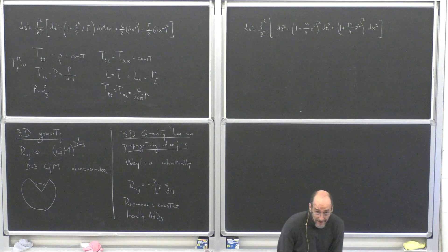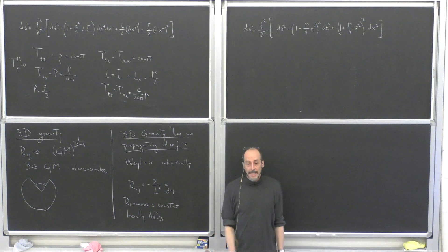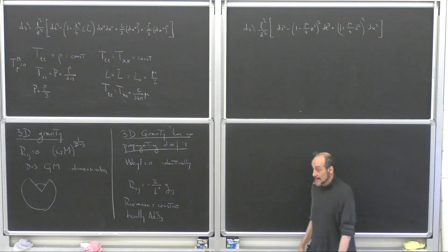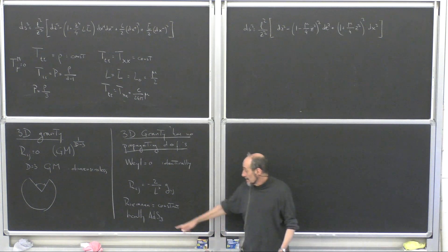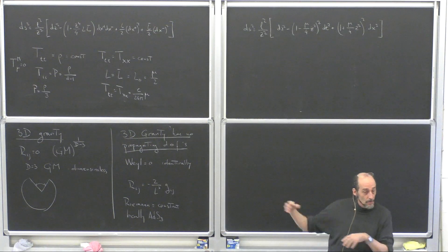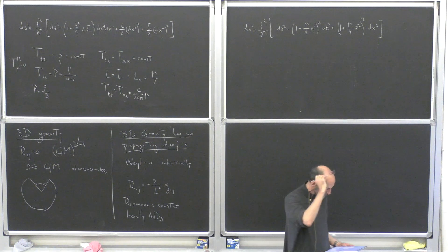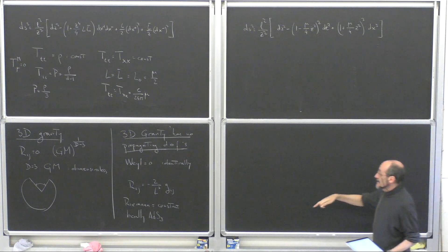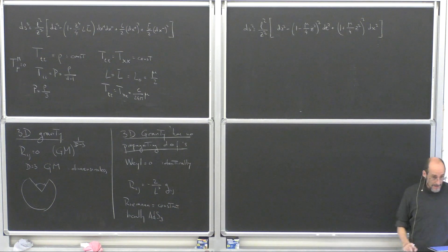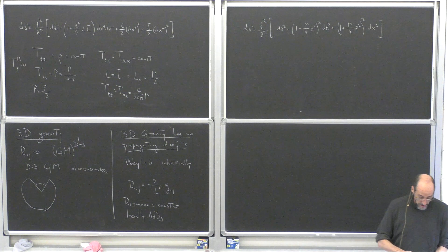This may look bad, because we wanted to find black holes and I'm telling you all solutions are like ADS3. But black holes and non-trivial solutions will appear because even if they are locally all equivalent, globally there will be differences. These global differences are what will be responsible for the appearance of horizons and other properties. So let's construct metrics that are ADS3 but where we can change the global properties.